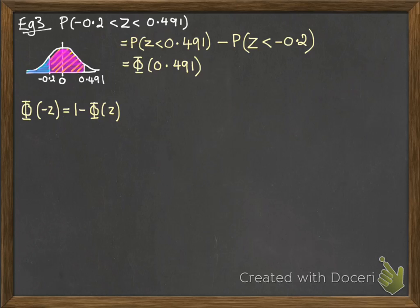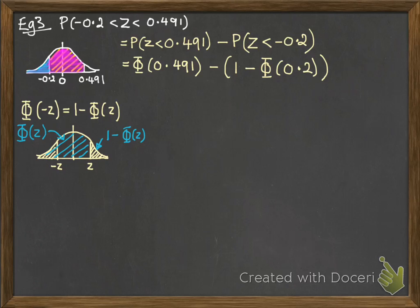So if you think about that one being minus z, you could match that to being the z on the other side, the positive z. So we would have to do 1 minus the Φ of z there because that's what Φ of z would look like. So we'll do 1 minus Φ(0.2).